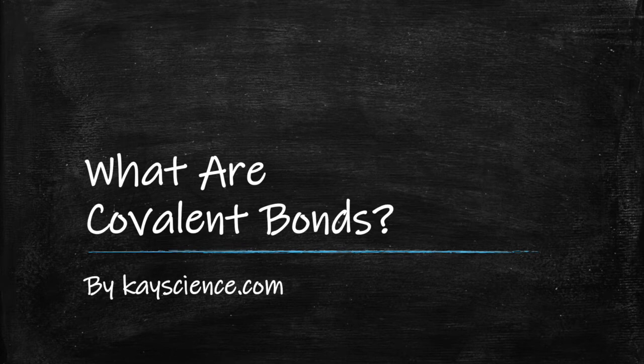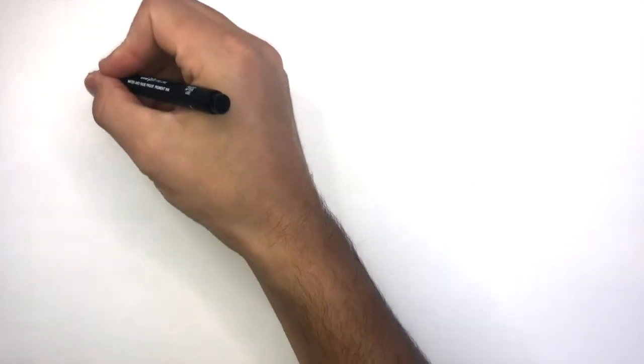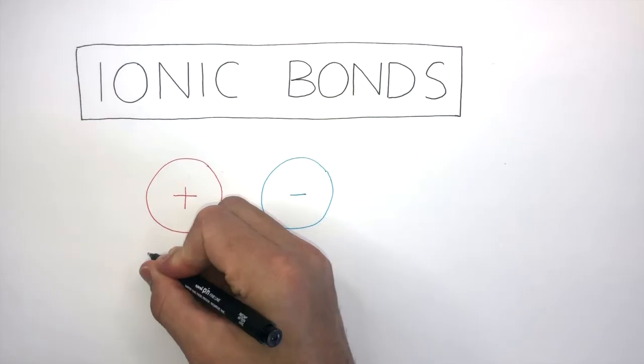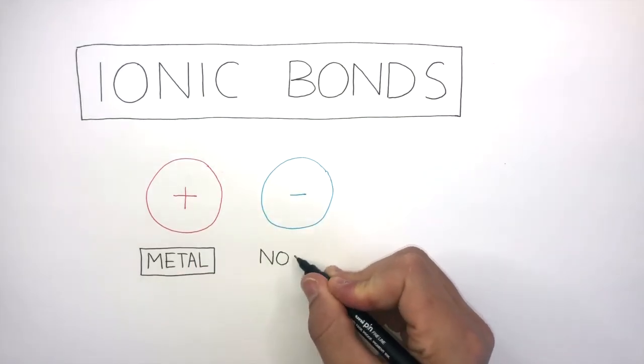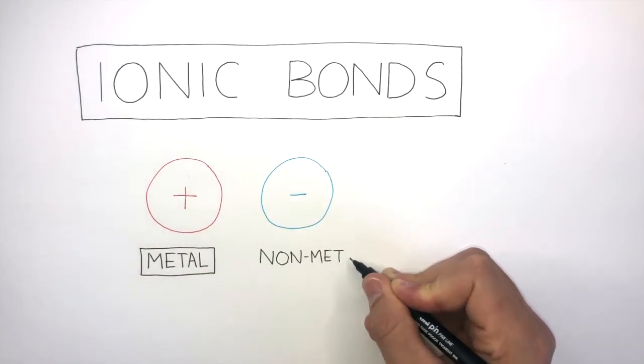What are covalent bonds? By kscience.com. Let's remind ourselves that ionic bonds exist between positively charged metal ions and negatively charged non-metal ions.